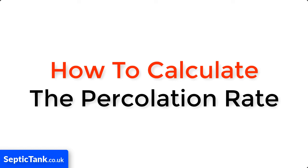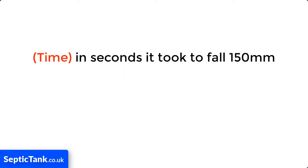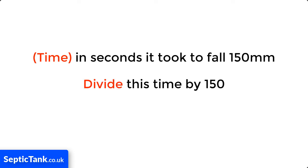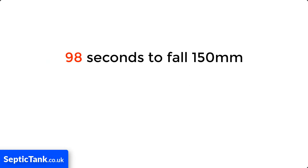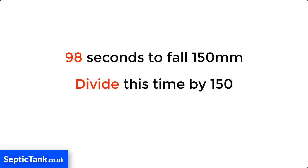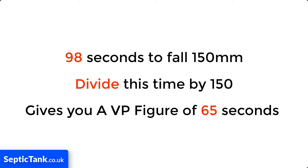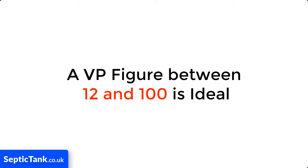How do you calculate the percolation rate? It's really easy. You take the time it took in seconds for the water to fall 150mm, then you divide this time by 150, and this result gives you a VP figure. For example, if it took 98 seconds for the water in the soak away hole to fall 150mm, you divide 98 by 150, which gives you a VP figure of 65 seconds — which is brilliant, because a VP figure between 12 and 100 is ideal.